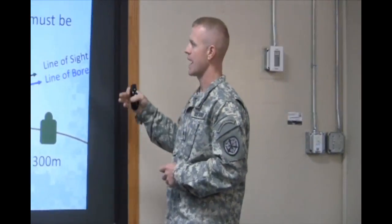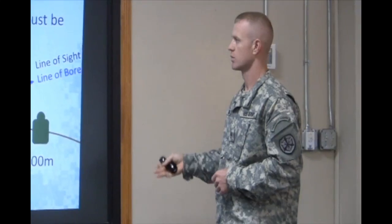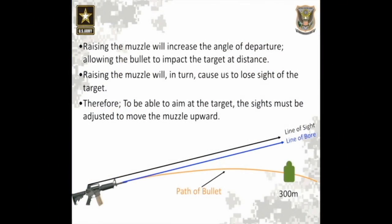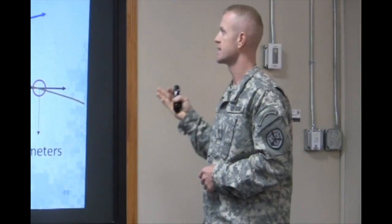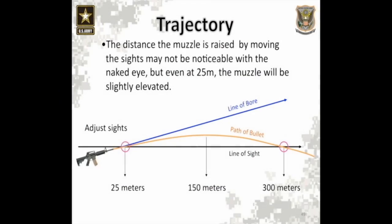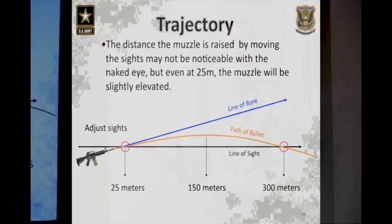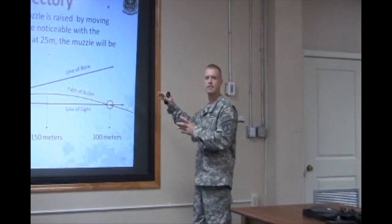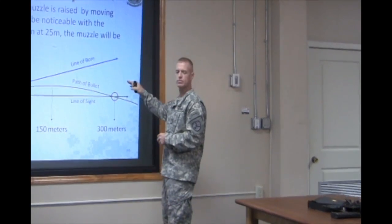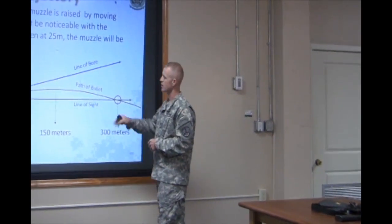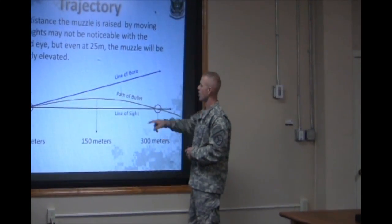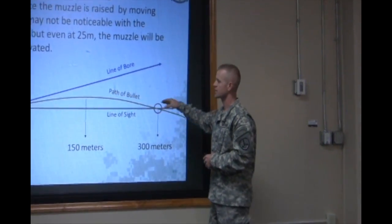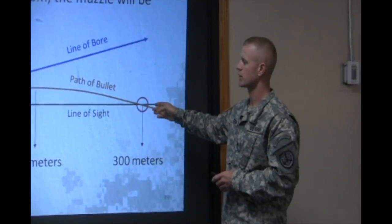To be able to aim at the target, the sights must be adjusted so the muzzle will be elevated and the line of sight will still be on the target. The distance the muzzle is raised by moving the sights may not be noticeable to the naked eye, but even at 25 meters, the muzzle will be elevated slightly. This is a very drastic example of what it looks like from the side. As you can see, the angle of departure is increased, allowing the path of our bullet to cross our line of sight at 25 and 300 meters.